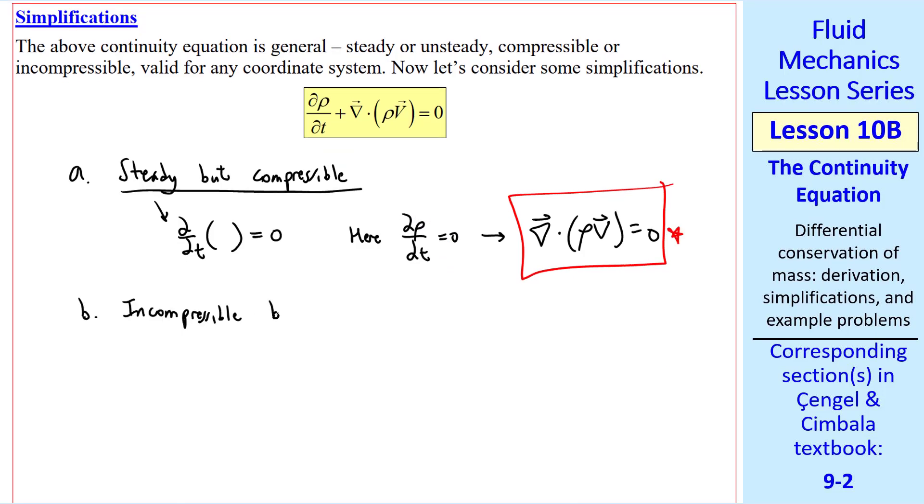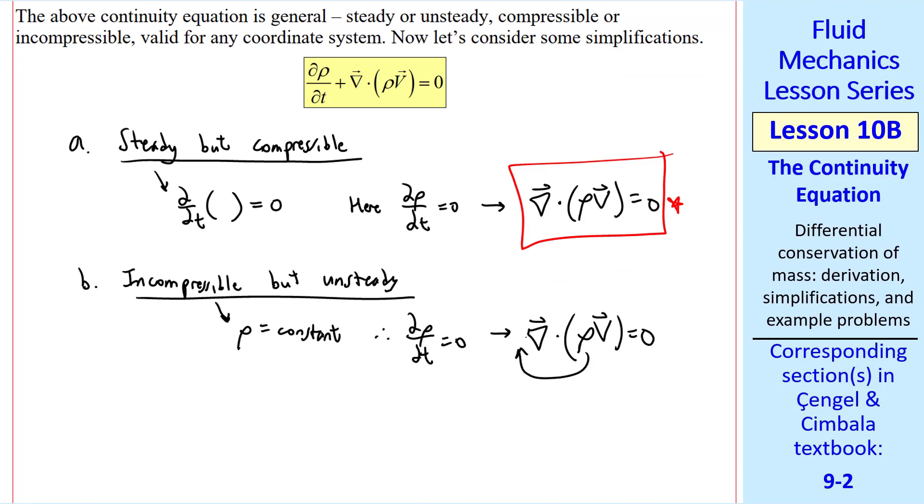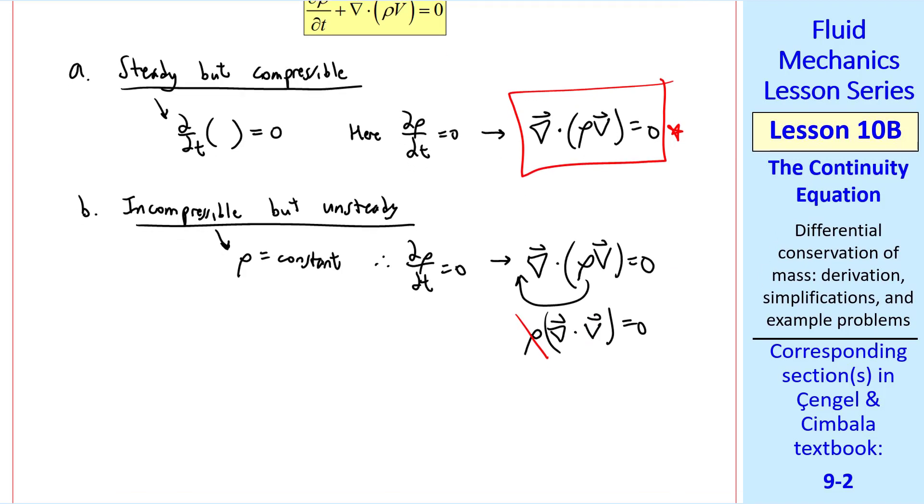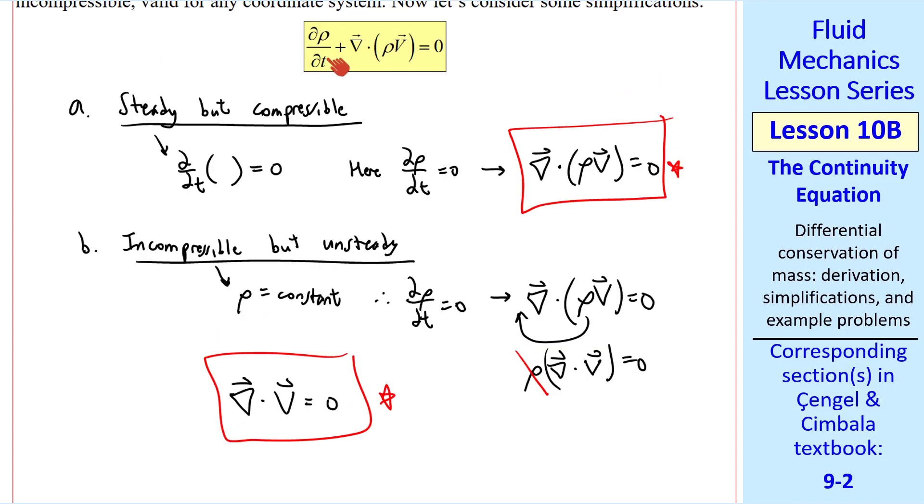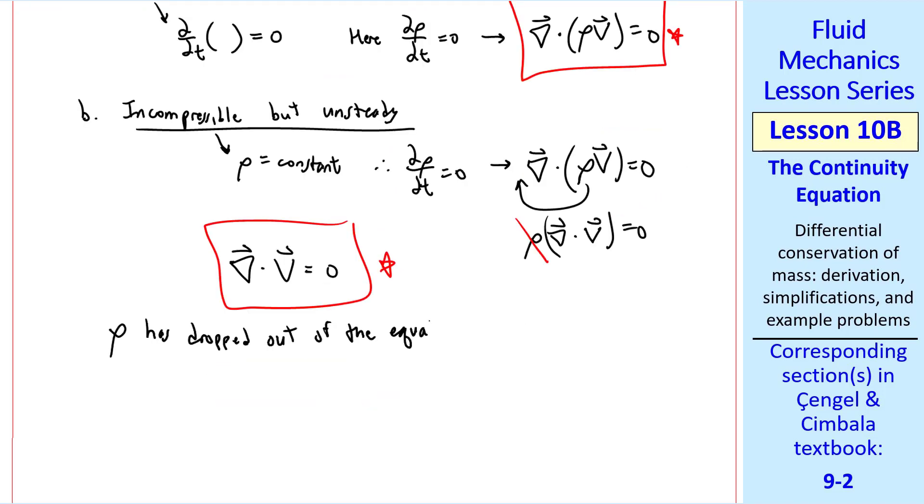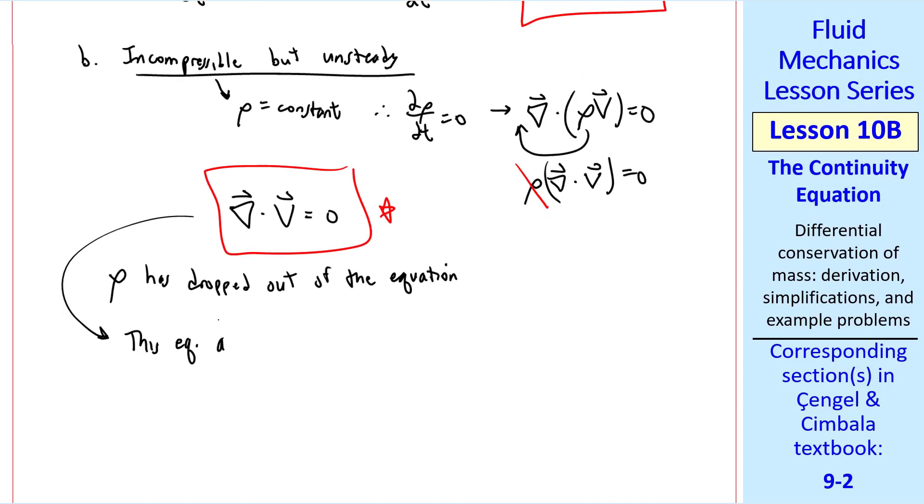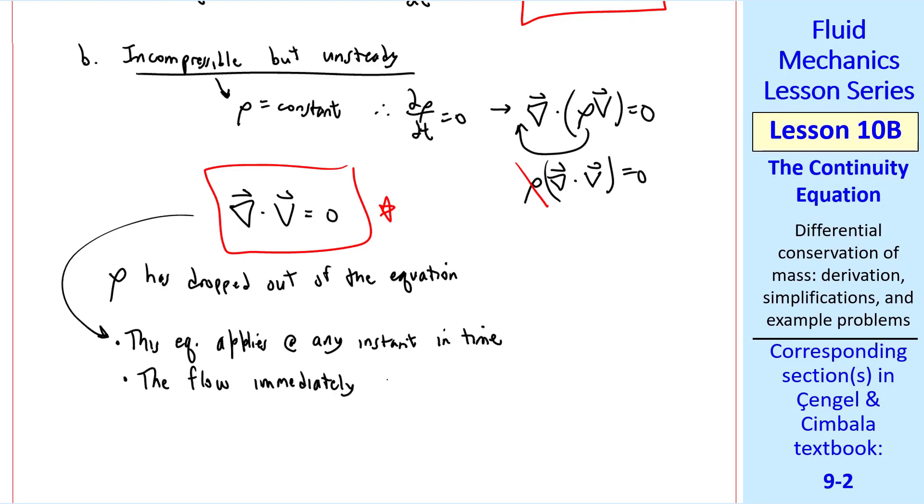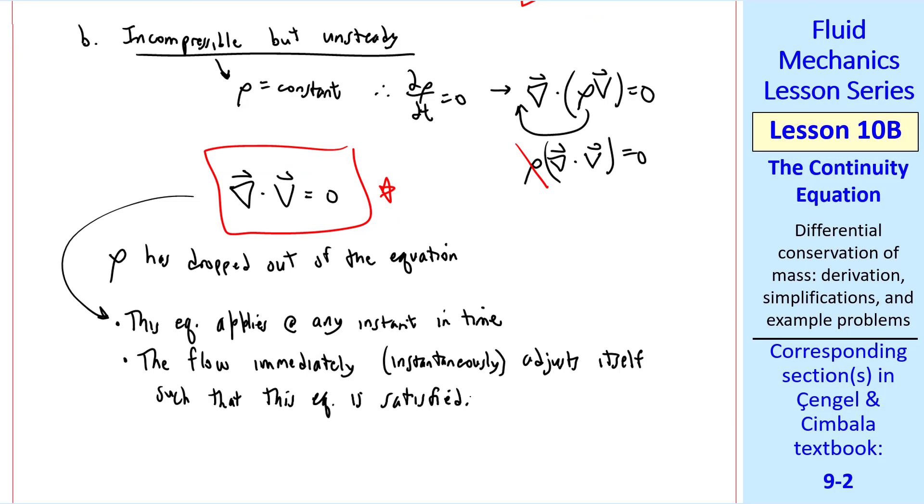What if we have incompressible but unsteady flow? Well, incompressible means that rho is a constant. Therefore, del rho del t is zero, again this term, which is the same result we had here but for a different reason. So we get the same equation. But if rho is a constant, we can take it outside the gradient. And dividing both sides by rho, we get rid of the rho. So our expression is del dot v equals zero for incompressible, unsteady flow. Notice that the unsteady term has dropped out even though this flow is unsteady. In fact, rho has dropped out of the equation. What does this mean physically? It means that this equation applies at any instant in time. The flow immediately or instantaneously adjusts itself such that this equation is satisfied.